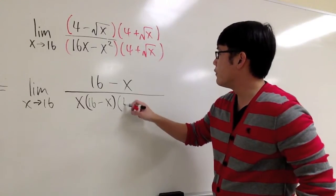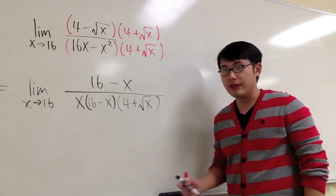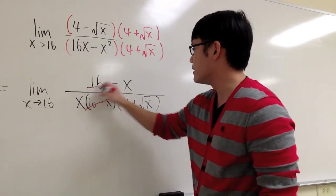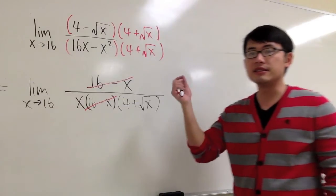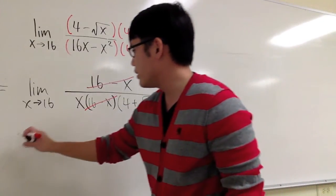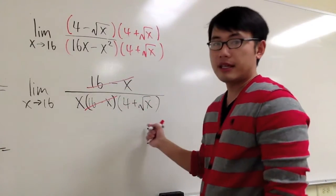And then I will bring this down, 4 plus square root of x. And notice that 16 minus x, 16 minus x, they can cancel each other out. Something on top, something on the bottom, at the end, what we can do is plug in 16 into all the remaining x.